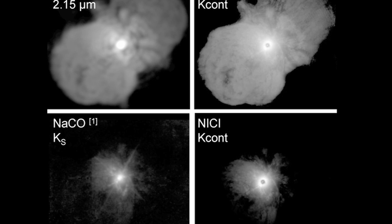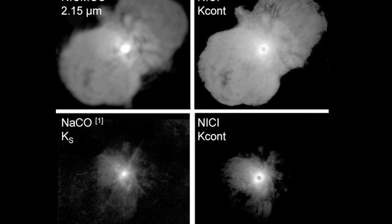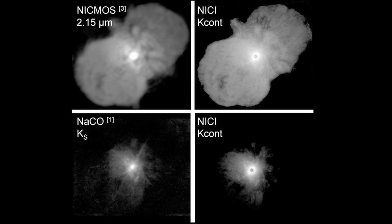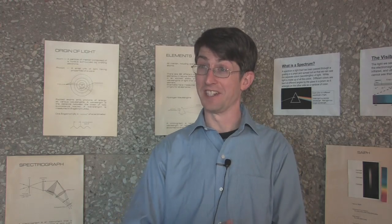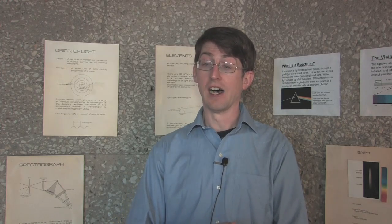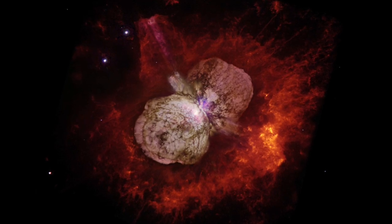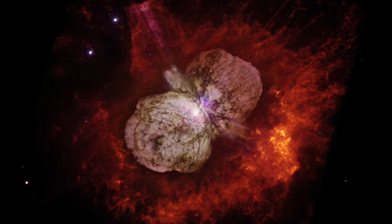In the 1850s, it underwent what's called its Great Eruption, where for a brief period of time it was actually, other than the sun, one of the brightest stars in the sky. Unfortunately, it's only visible from the southern hemisphere here on Earth, so we use either the Hubble Space Telescope or the Gemini Telescope to study it.